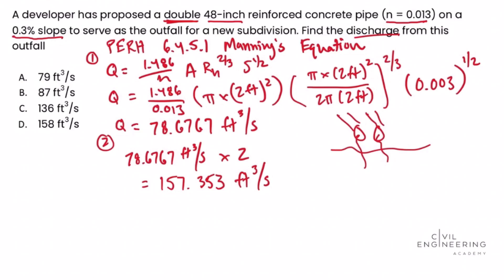Looking at the answer choices, 157.353 cubic feet per second is closest to answer choice D. I hope that helped you. If you're looking for more practice and review as you study for the Civil PE exam, head over to civilengineeringacademy.com and check out our ultimate Civil PE breadth and depth review courses.